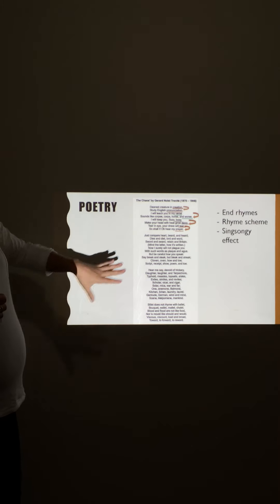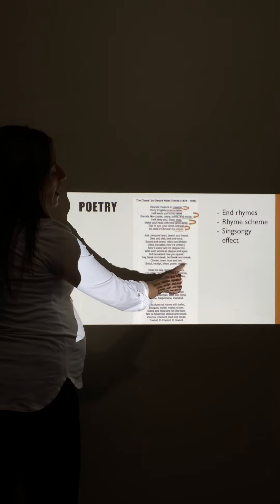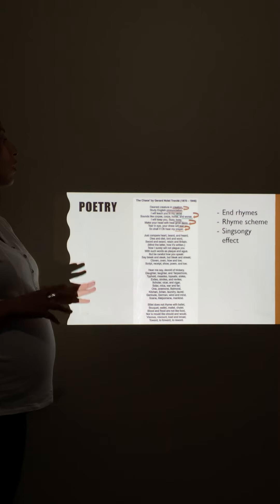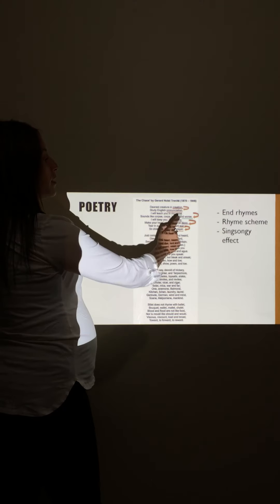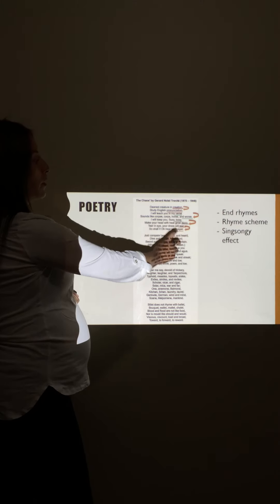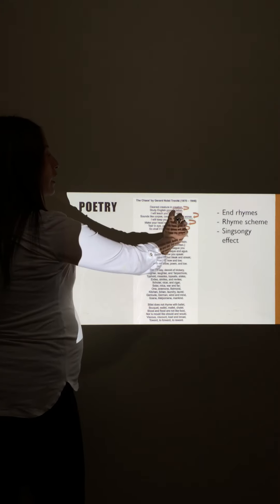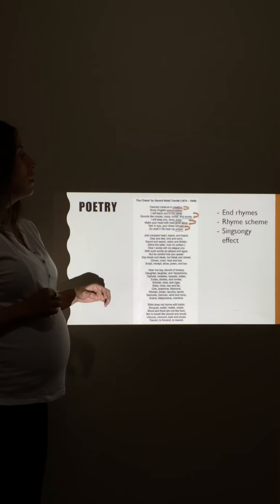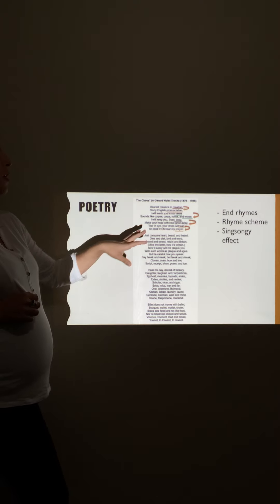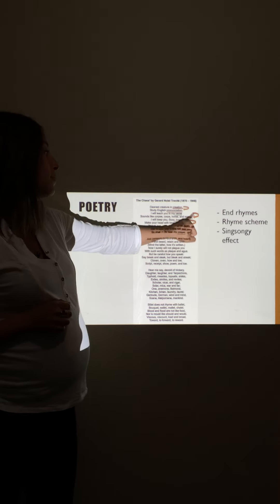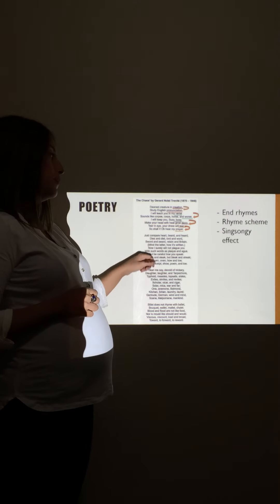We are going to look at the end rhymes — the final words at the end of each line — and then we are going to check the rhyme scheme. For example, the first word rhymes with the second one and so on. For instance, 'creation' rhymes with 'pronunciation,' 'verse' with 'words,' 'busy' with 'busy,' and 'turn' with 'prayer.' So we have words that rhyme at the end of every line.